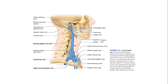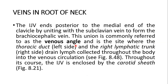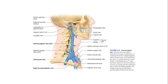The internal jugular vein ends posterior to the medial end of the clavicle. This is the clavicle — this is the lateral end and this is the medial end — and posterior to that the internal jugular vein terminates. This is the level of the T1 vertebra; you can see here that this is C7 and this is T1, and the internal jugular vein terminates at this level.